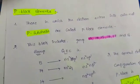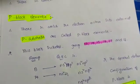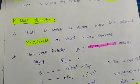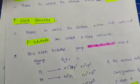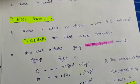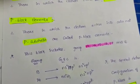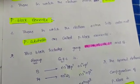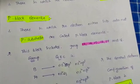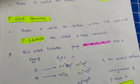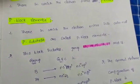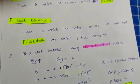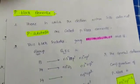Next, we know about P-block elements. P-block elements are on the right side of the periodic table. Those in which electron enters into the outermost P-subshell are called P-block elements. This block includes groups 13 to 18. These are 6 groups: group 13, 14, 15, 16, 17, and 18.